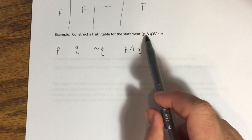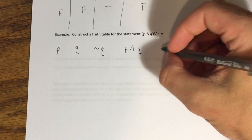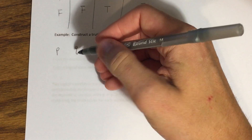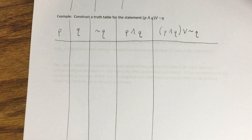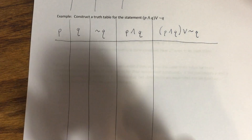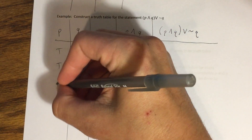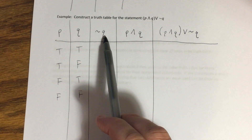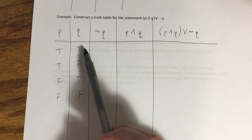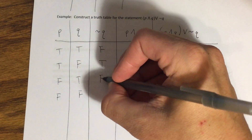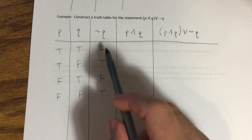Things in parentheses should also get their own column — so 'p and q' gets its own column. Then once I have the parenthesized expression and the negation, I can put everything together into a final column: 'p and q or not q.' With only two component statements, there are four combinations of truth values: true-true, true-false, false-true, false-false. For the negation, 'not q' has the opposite truth value as q.